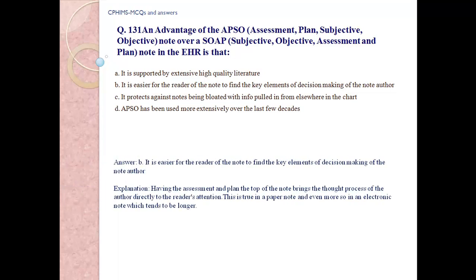Answer B. It is easier for the reader of the note to find key elements of decision making of the note author. Explanation: Having the assessment and plan at the top of the note brings the thought process of the author directly to the reader's attention. This is true in a paper note and even more so in an electronic note, which tends to be longer.